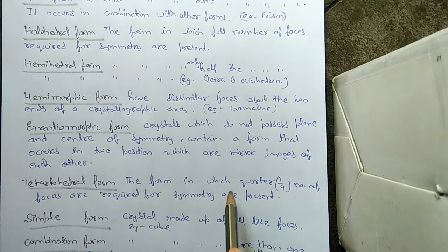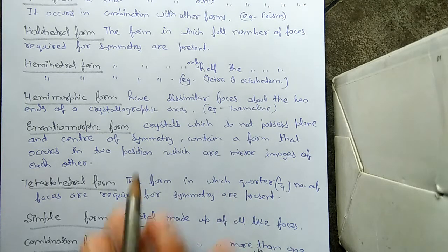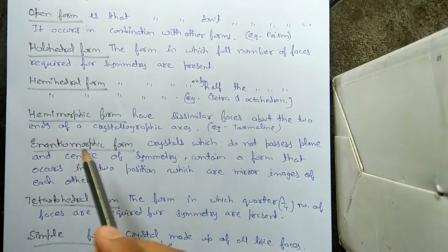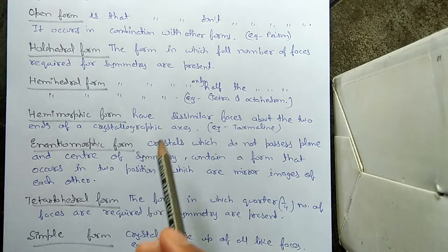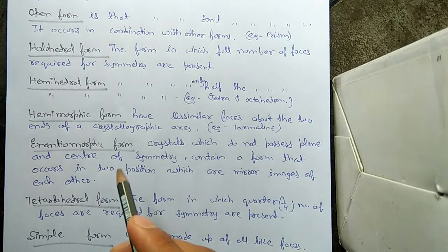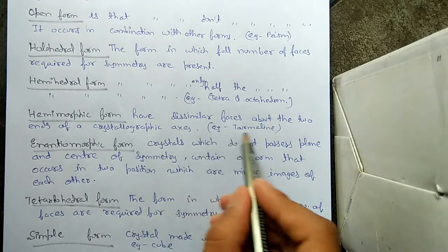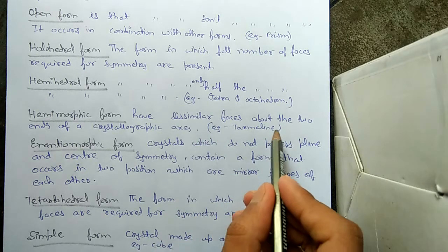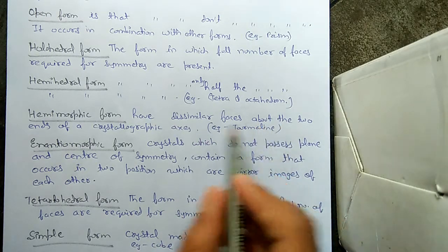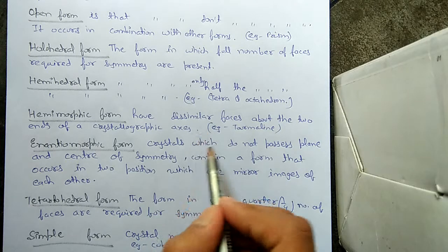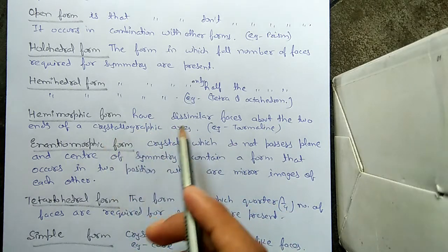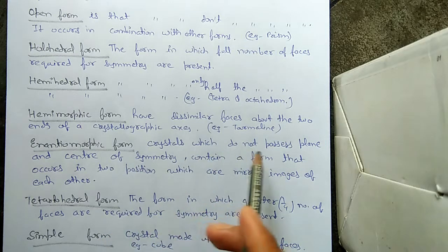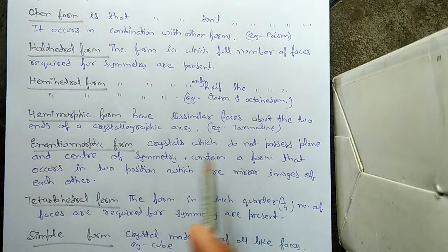The next one is the hemimorphic form. A hemimorphic form has dissimilar faces about the ends of a crystallographic axis. Suppose this is a crystallographic axis — here it might have a square face and here it can have a triangular face. Such a form is called a hemimorphic form, in which we find different faces about the two ends of a crystallographic axis.